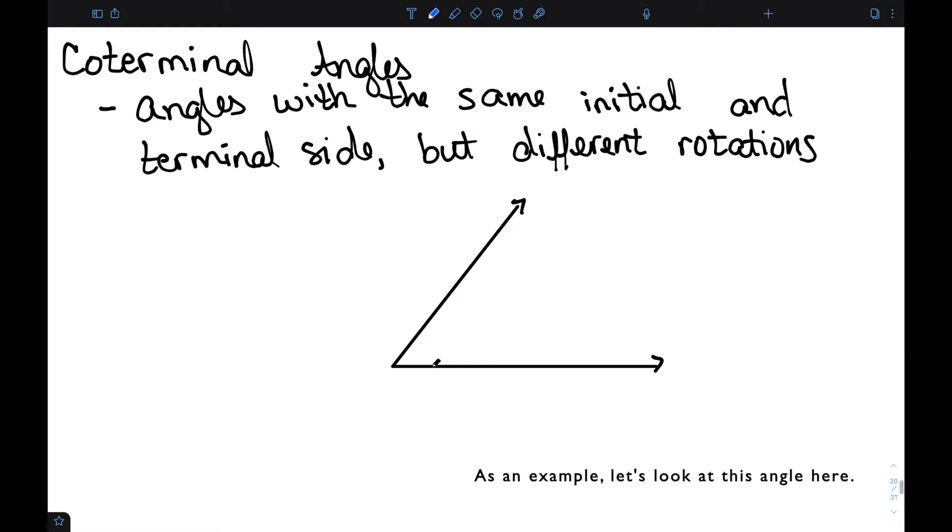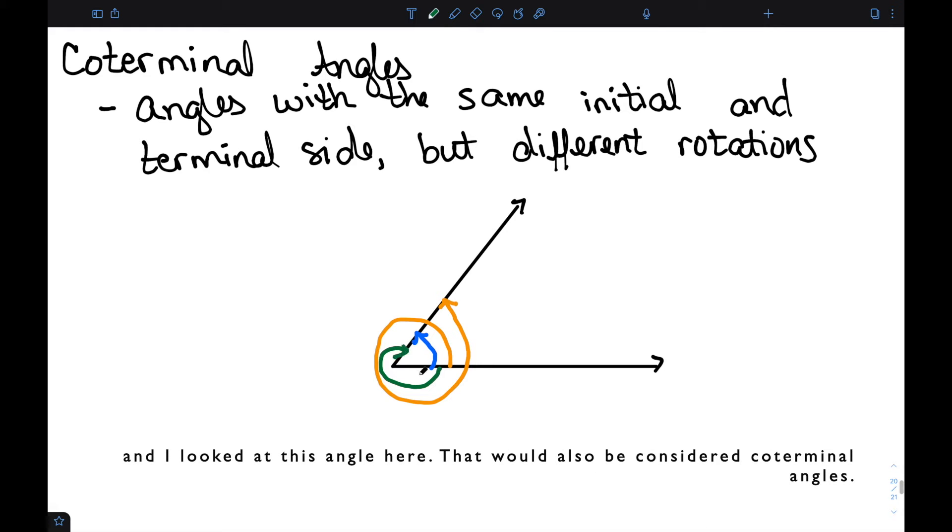As an example, let's look at this angle here. I could do this rotation and get the measure of the angle. But perhaps instead of that I went an entire full rotation plus a little bit extra. That would be another example of a coterminal angle. Or perhaps I moved in the negative direction and I looked at this angle here. That would also be considered coterminal angles.